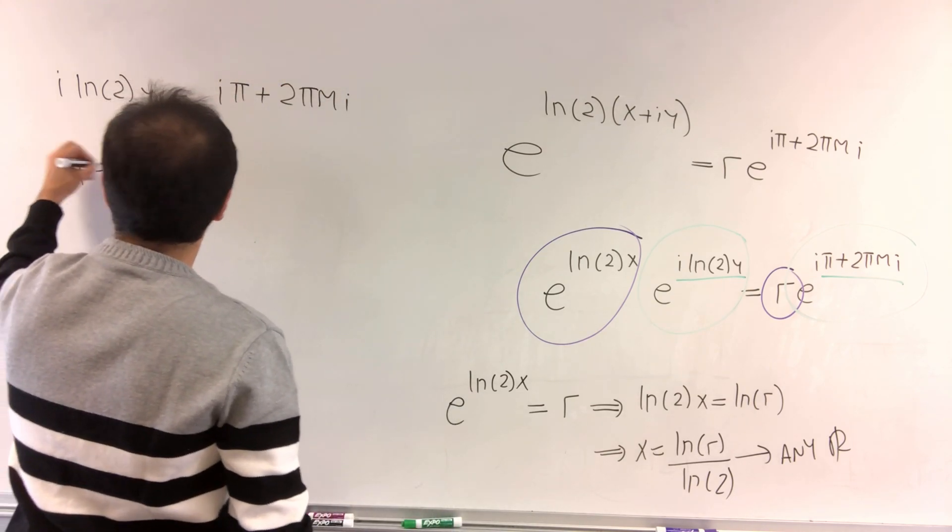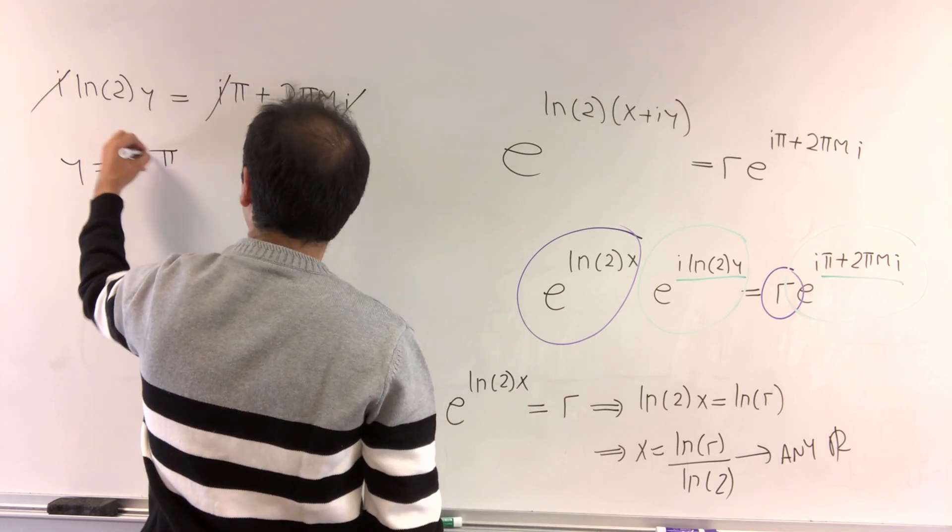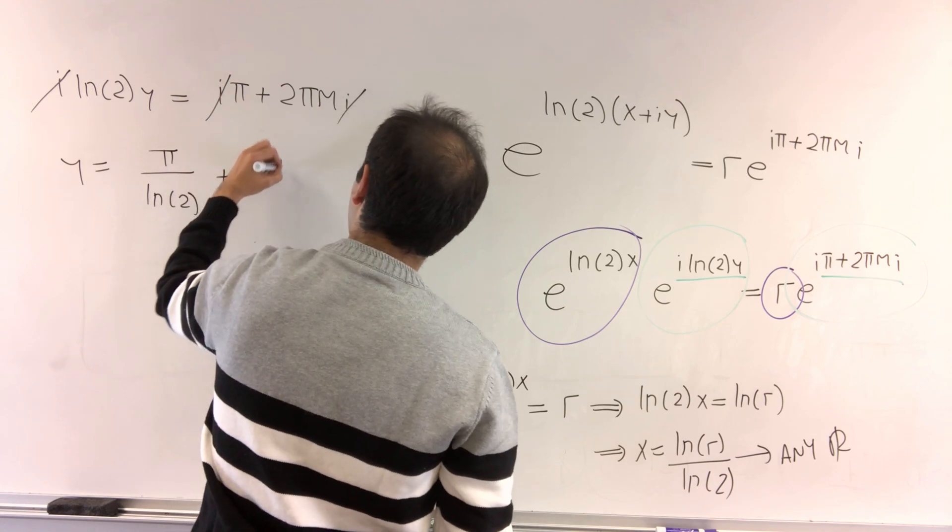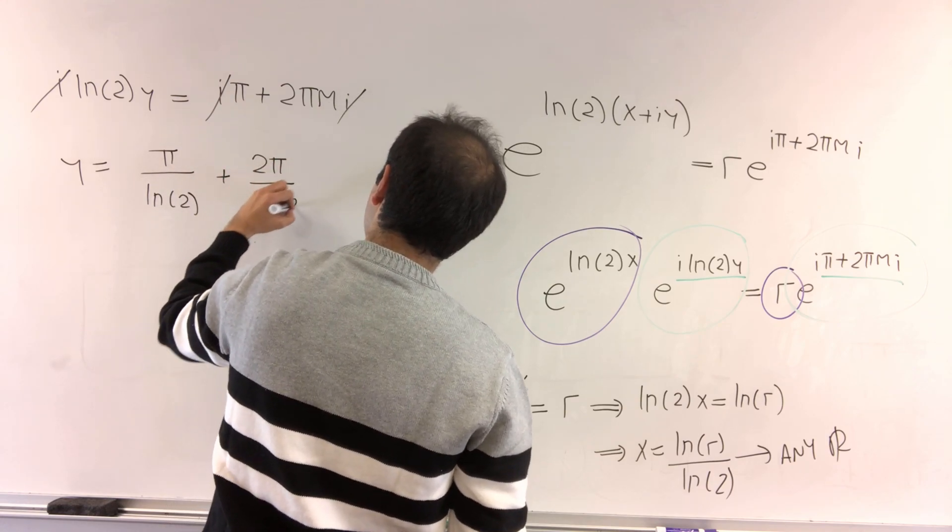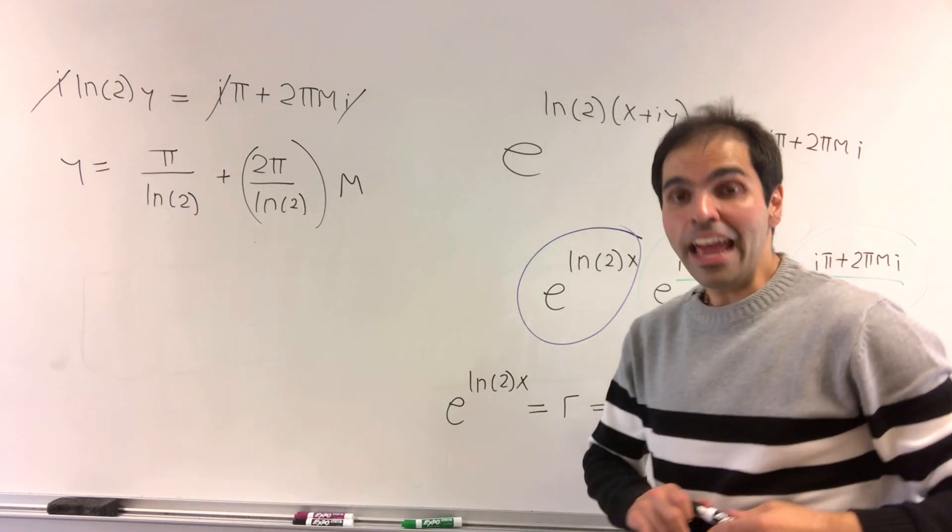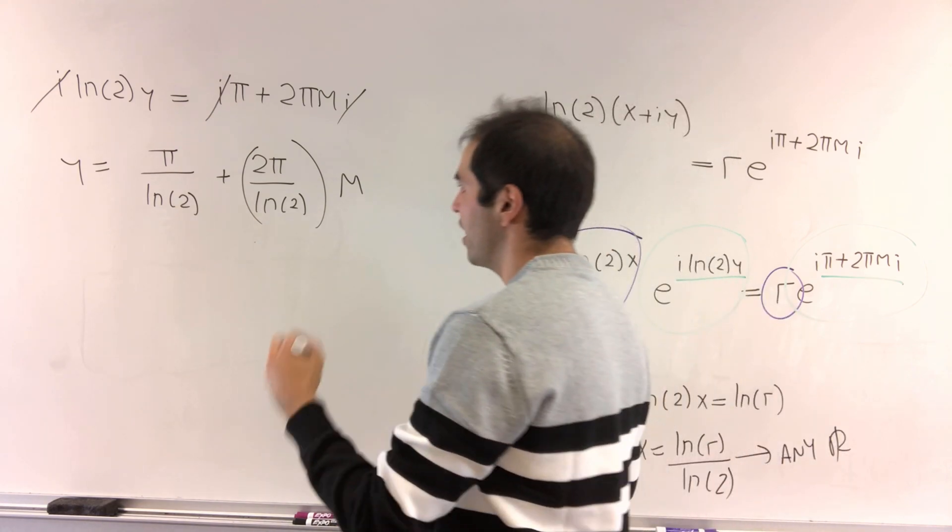And then y, so the point is the i's cancel out, and y is pi over ln of 2 plus 2 pi over ln of 2 times m. All right, and now we can finally describe geometrically what's going on.